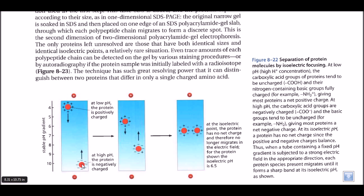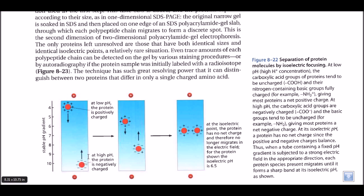For example, in this picture, this protein is having a slightly positive charge because the C-terminal has C=O and the N-terminal has NH3+. At high pH, the carboxylic acid groups are negatively charged — that means COO⁻ — and the basic groups tend to be uncharged, that means they are in NH2 form, giving those proteins a slightly negative charge. In this case, the carboxy terminal has COO⁻ but the N-terminal is uncharged, giving the protein an overall negative charge.